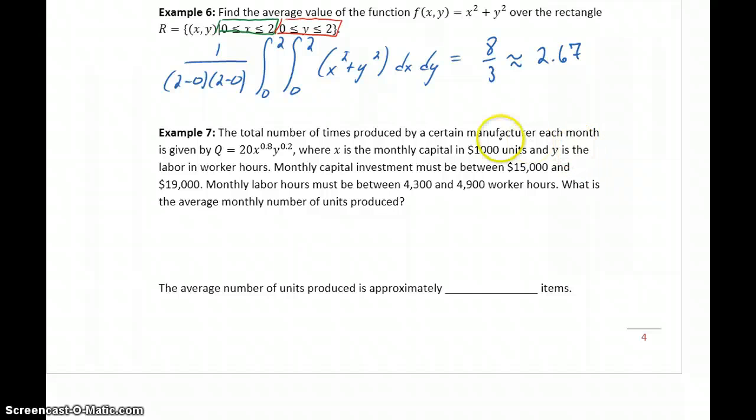Y is labor in worker hours, so y is bounded between 4,300 and 4,900. X is the monthly capital between $15,000 and $19,000. But x is in $1,000 units, so 15 ≤ x ≤ 19, where these numbers represent $19,000 and $15,000.